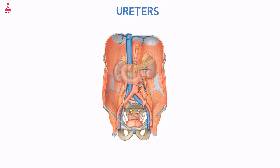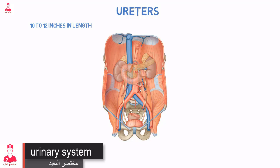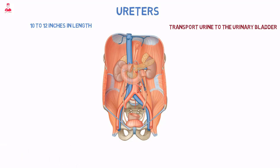The ureters are paired muscular tubes approximately 10 to 12 inches in length that transport urine to the urinary bladder. The upper half of the ureters are within the abdomen and the lower half within the pelvis. Each ureter originates at the renal pelvis and courses slightly anteriorly and medially, then descends the abdomen just anterior to the psoas muscles. The ureters then enter the posterior wall of the bladder at an oblique angle.